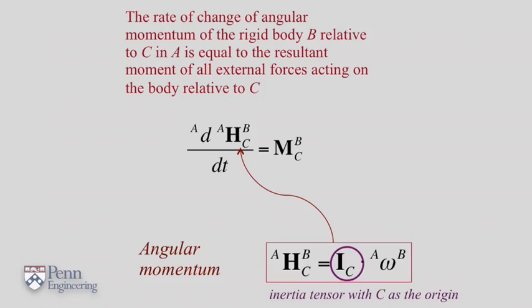Here, the subscript c denotes the fact that you measured the components with c as the origin. Remember, c is the center of mass. The angular velocity is also obtained in the inertial frame.